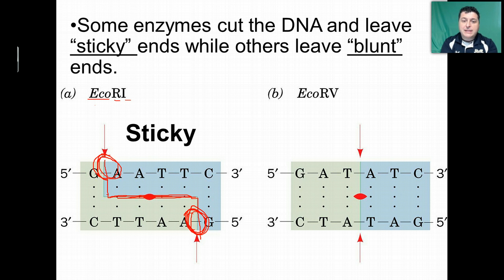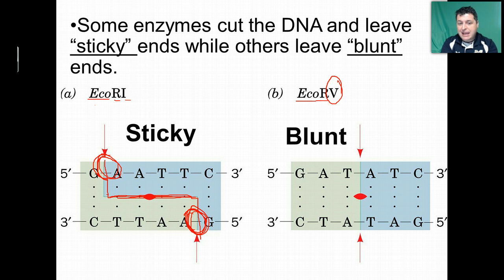Another enzyme, also found from the same species of bacteria — the fifth enzyme discovered from that bacteria — when it cuts, it recognizes a specific site and produces a blunt cut, cutting the covalent bonds right across from each other and causing the DNA to fall apart.